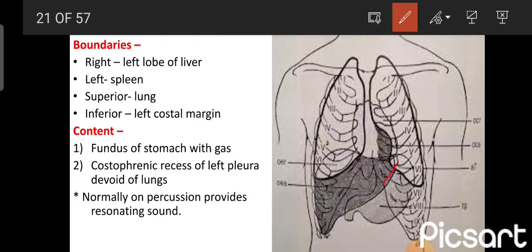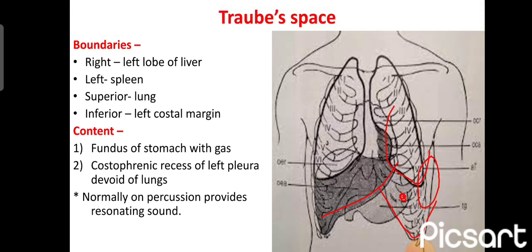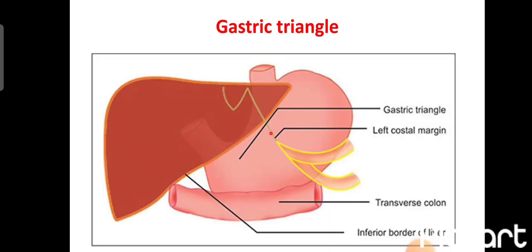The Traube's space: its boundaries are the left lobe of the liver on the right, the spleen on the left, the lung superiorly, and the costal margin inferiorly. Its contents are the fundus of the stomach with gas and the costodiaphragmatic recess of the left pleura devoid of lungs. Normally on percussion this area gives a resonating sound, but enlargement of surrounding viscera causes dullness, indicating organ enlargement.